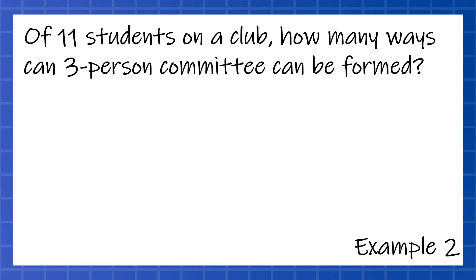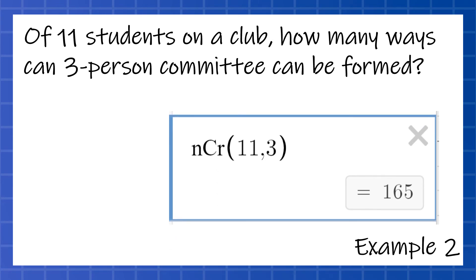Another example: of 11 students in a club, how many ways can a three-person committee be formed? So we have 11 people to choose from and we want a committee. We're picking three people. It doesn't matter what order those three are in — they're going to work together as a team. So we're going to say this is a combination. We do NCR 11 choose 3, and we get 165 for our answer. These answers are going to feel bigger than maybe makes us comfortable — it feels like there shouldn't be that many options. But there'd be a lot more options if it were a permutation.